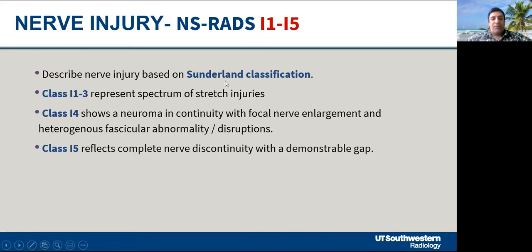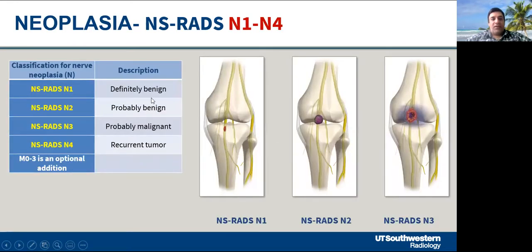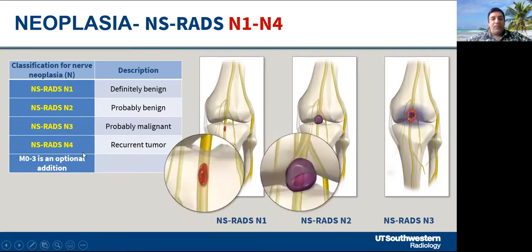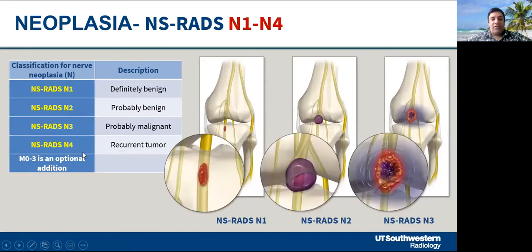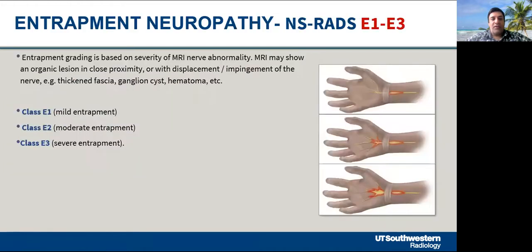The Sunderland classification is used for nerve injuries from I1 through I5. Neoplasia is classified from N1 through N3, with N4 for post-operative recurrence, covering different types of tumors as detailed in the paper. Entrapment neuropathy is graded from E1 to E3, ranging from mild to severe.